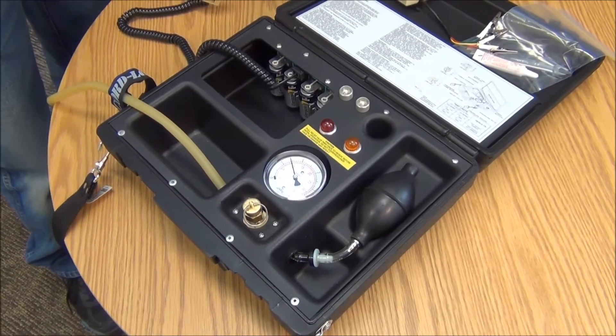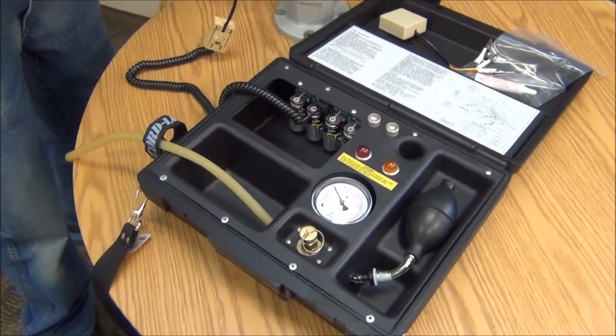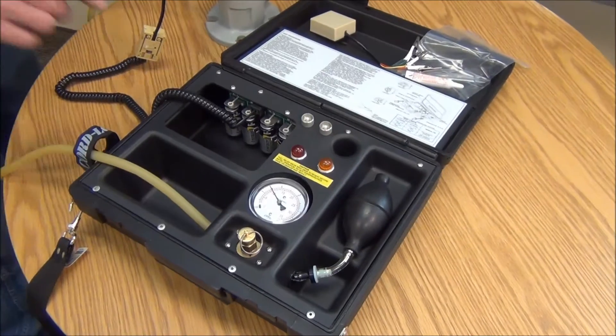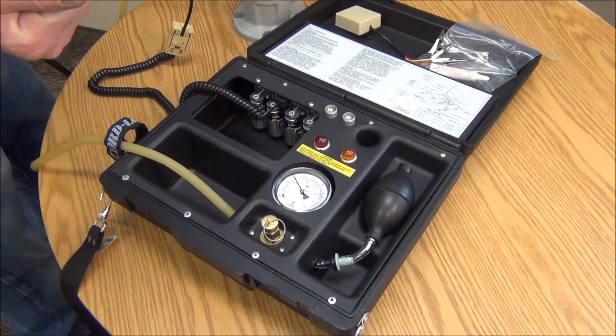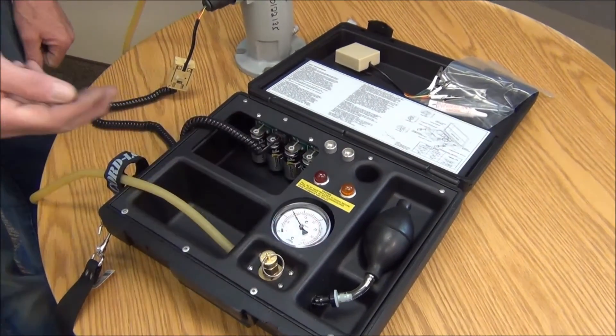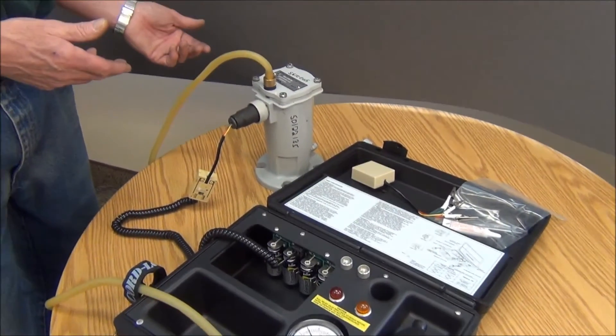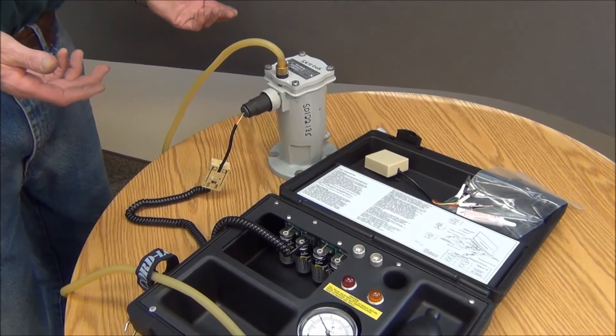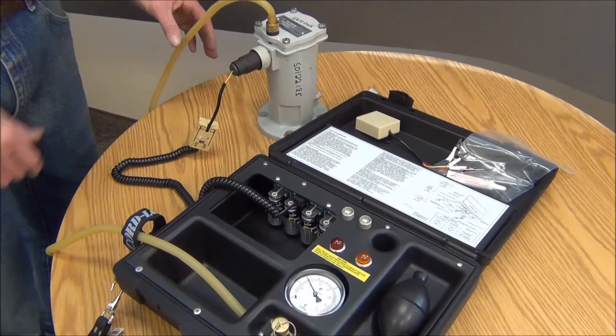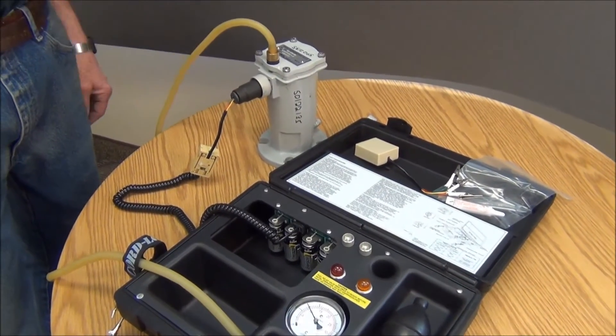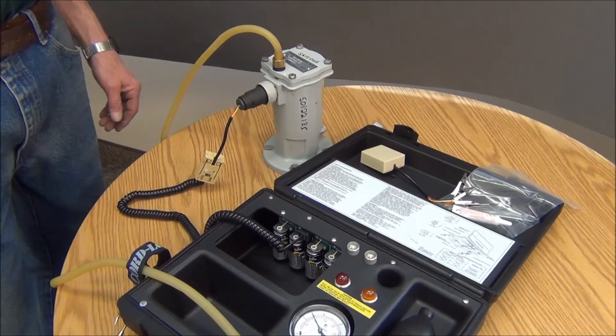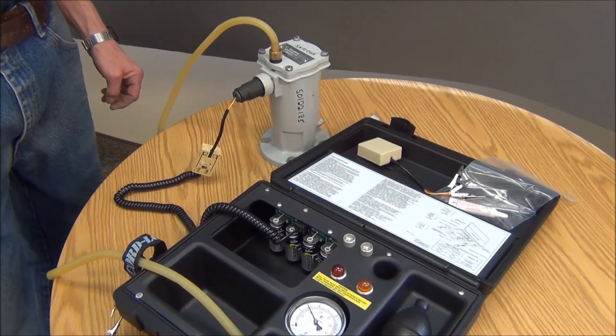What this is going to simulate is a slow rate of rise. When we relieve the pressure this time, we don't want that yellow light to trip. This would simulate a false trip on a transformer - it simulates a low rate of pressure rise.